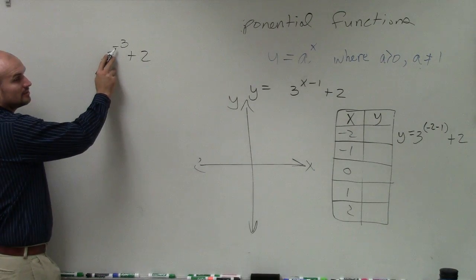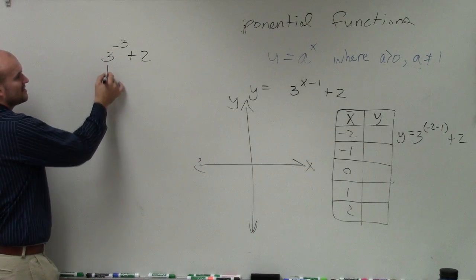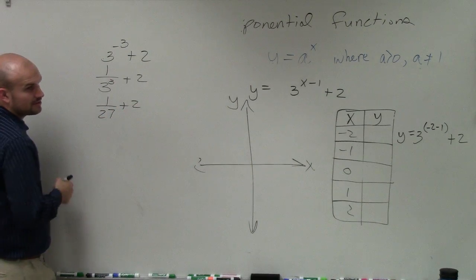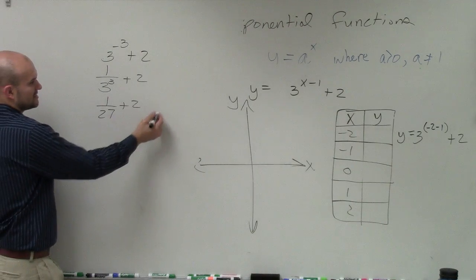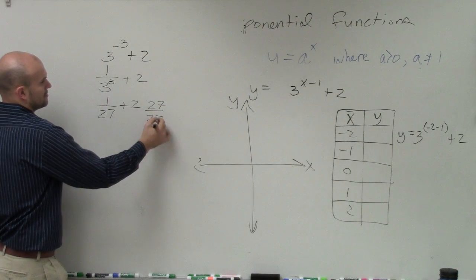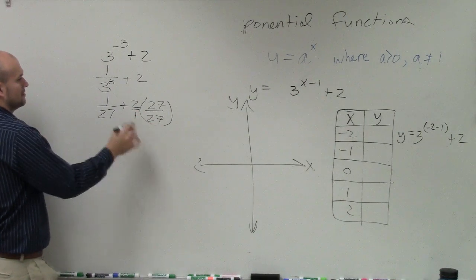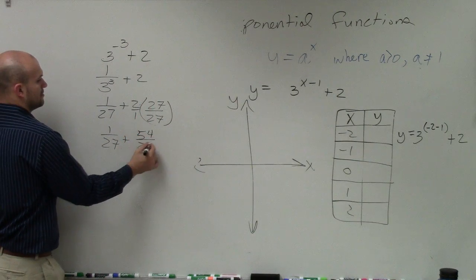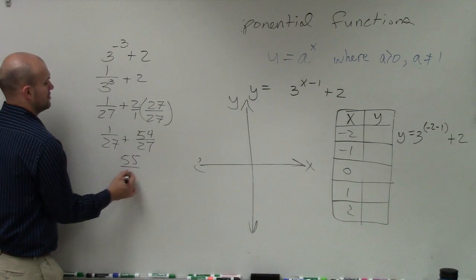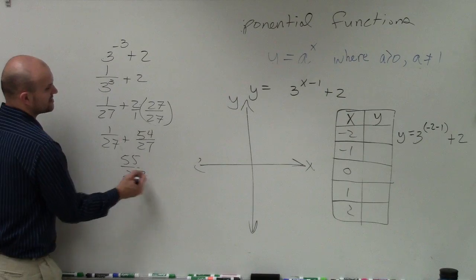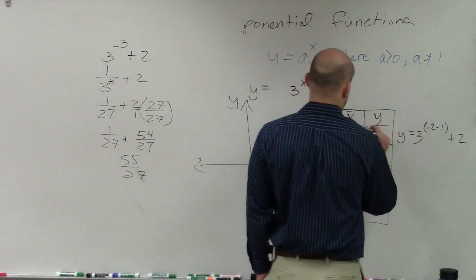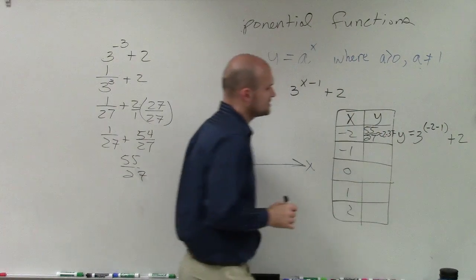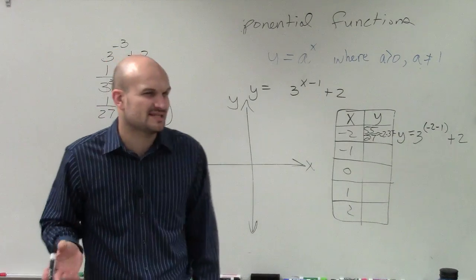So now, remember, 3 to the negative 3rd, remember that's a negative. So that's the same thing as 1 over 3 cubed plus 2, which is 1 over 27 plus 2. Then make those the same fractions. So that's going to be 54. So 54 over 27 is what? What is the decimal? So you could say 55 over 27, or if you're going to be graphing it, it's like 2.037, they said, approximately.